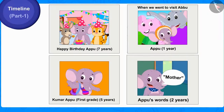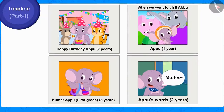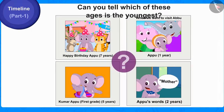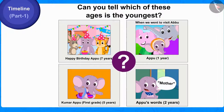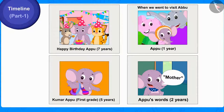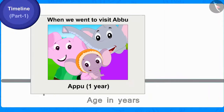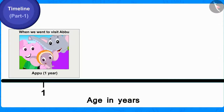Children, here we have four pictures of Appu and his age in those pictures. Can you tell which of these ages is the youngest? Out of these, the picture of Appu which was taken when Appu was one year old will be shown first on the timeline by writing one year on it like this.